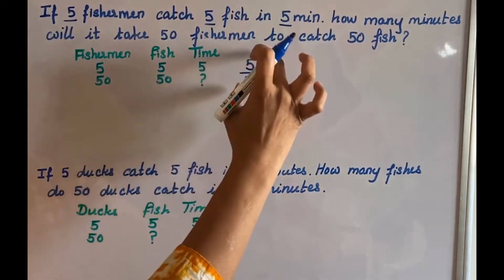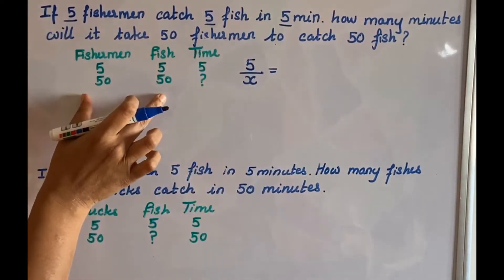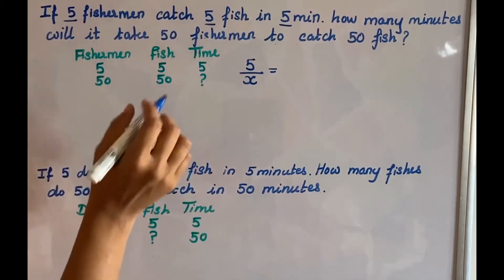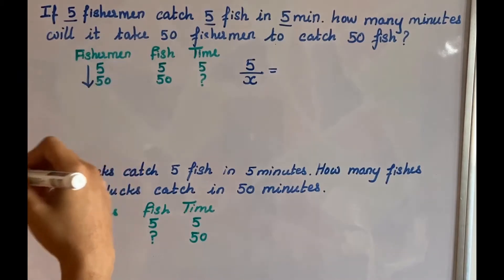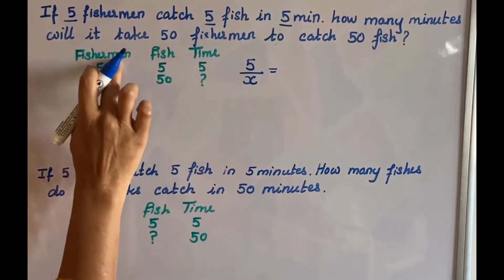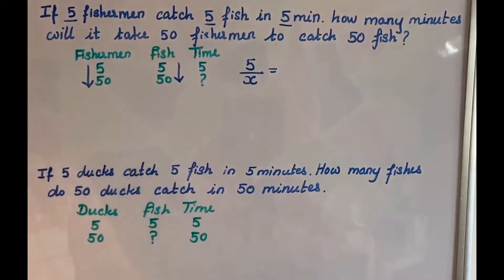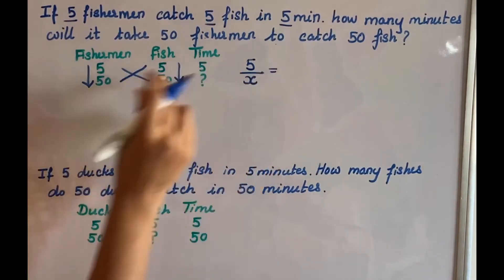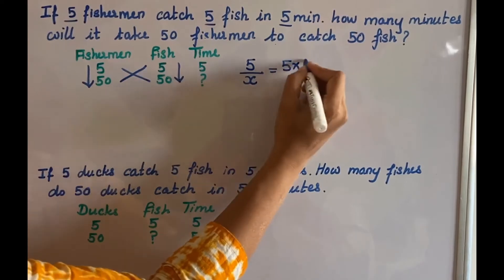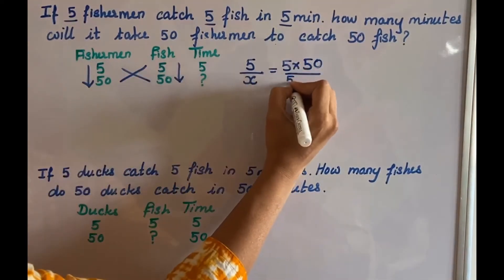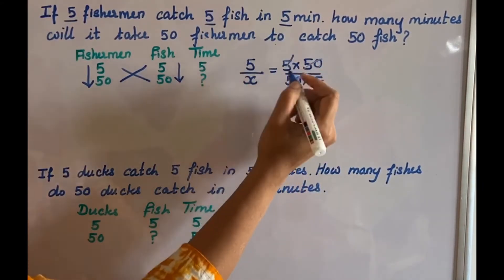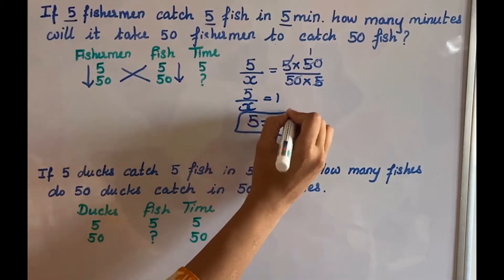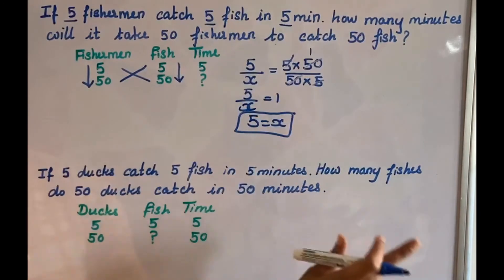Let's write the unknown first — 5 divided by x. Now we have to check the relationship between the fishermen and the fish: when the number of fishermen increases, the fish they catch also increases. So this is direct proportion. To solve direct proportion, we do cross multiplication: 5 into 50 divided by 50 into 5. Cancelling the 50s and 5s, the right-hand side becomes 1. So 5 divided by x equals 1, meaning x is 5. Therefore, 50 fishermen can catch 50 fish in 5 minutes.